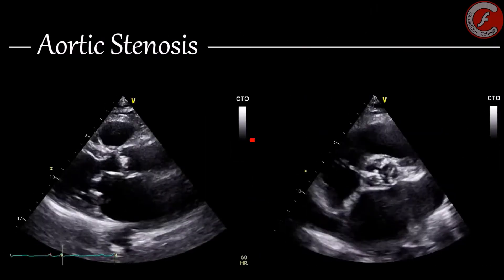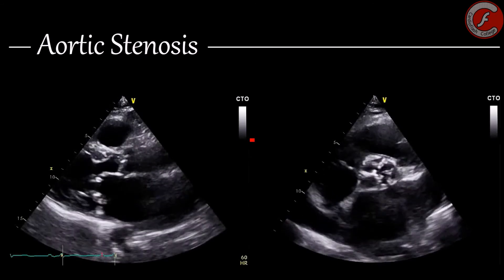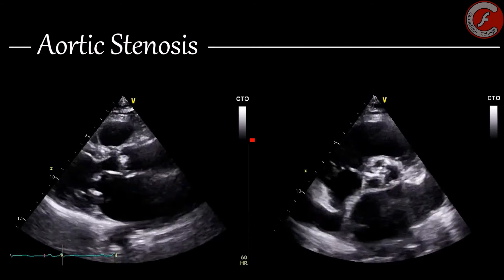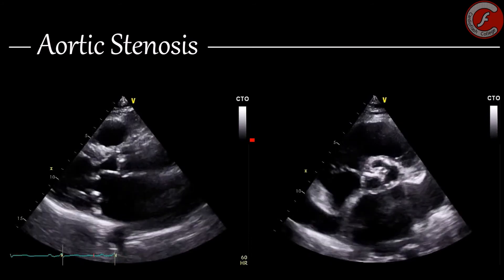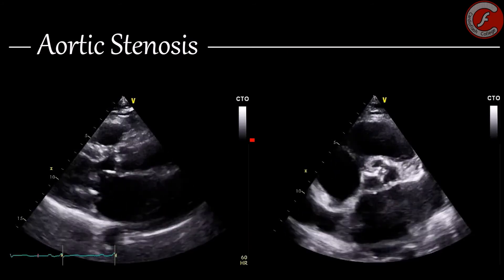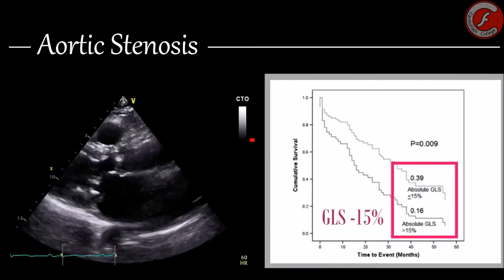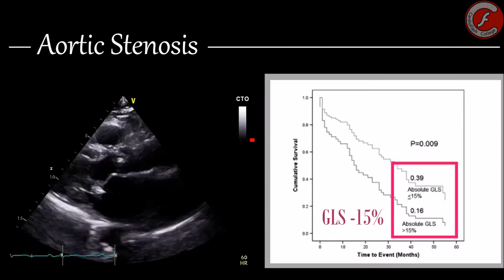Valvulopathies. As you know, in patients with asymptomatic valve disease, therapeutic intervention is based on the identification of morphological and functional changes that usually have a late appearance. This is why strain is a tool of special importance in these cases, because it is capable of identifying myocardial dysfunction in subclinical stages. In patients with severe and asymptomatic aortic stenosis, global longitudinal strain becomes an independent predictor of all-cause mortality when its value falls below minus 15%.